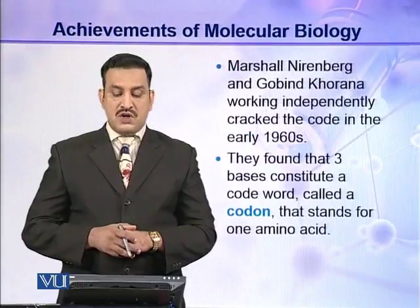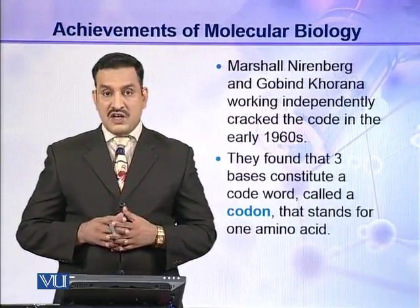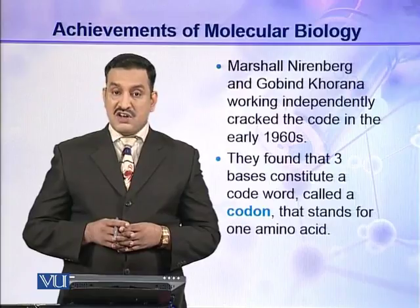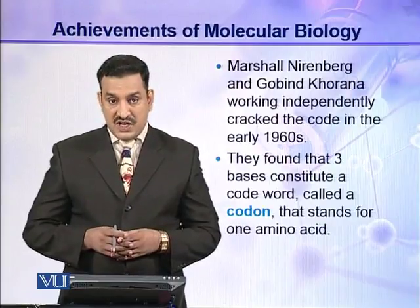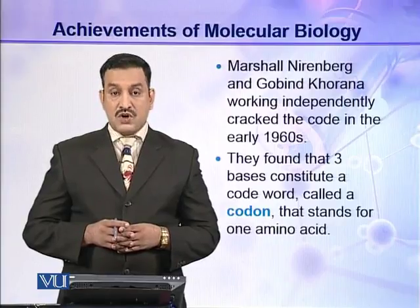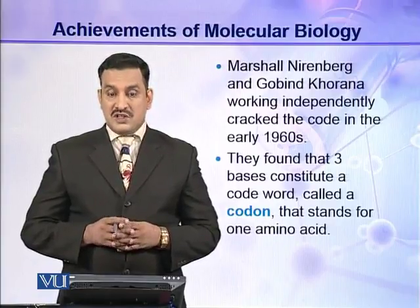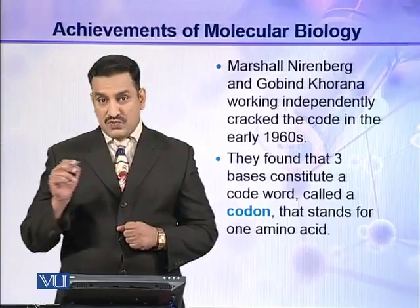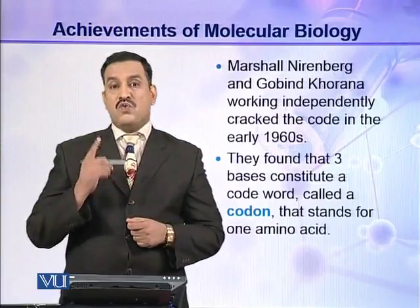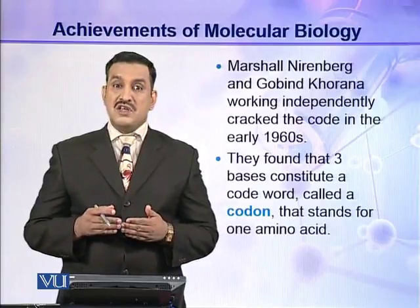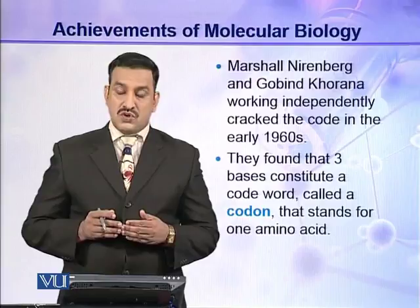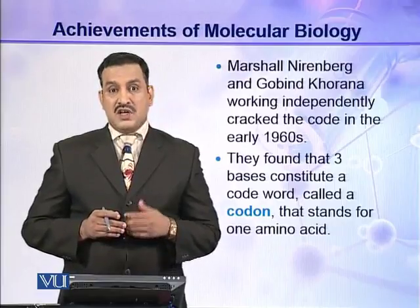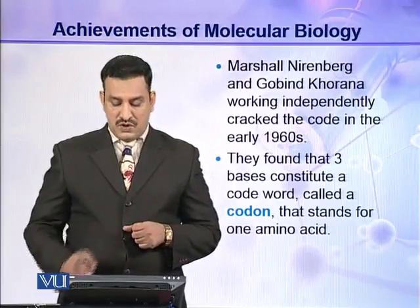The next important contribution was made by Marshall Nirenberg and Gobind Khorana. Working independently in the early 1960s, they cracked the genetic code. They found that three bases constitute a code word called a codon, which stands for one amino acid. This means three nucleotides on the DNA strand code for one amino acid, and all the information for synthesizing proteins containing 20 different types of amino acids is present in the DNA molecule in the form of codons.